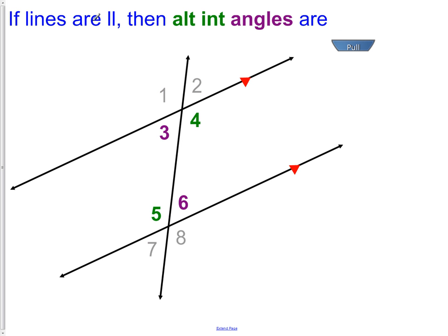If lines are parallel, then the alternate interior angles... If you remember from our last lesson, 3 and 6 would be alternate interior angles and 4 and 8 would also be alternate interior angles. When the lines are parallel, these angles are now congruent.